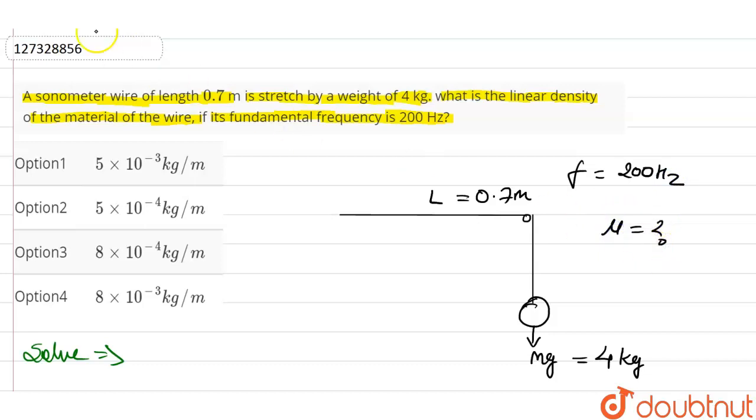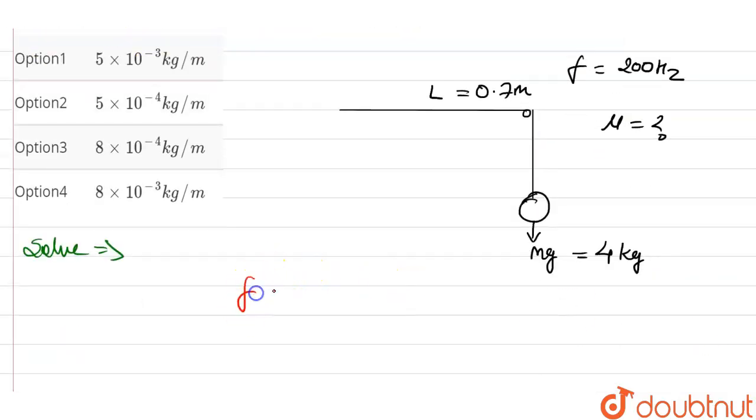So we know that fundamental frequency of the sonometer wire, that is F is equal to 1 upon 2L into root T by mu. So here L is the length of the sonometer wire and T is the tension of the wire and mu is the mass per unit length, and we show this as linear density.